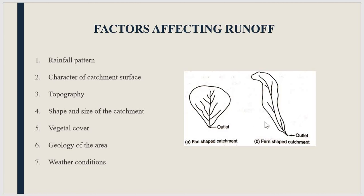If the area is very small and has a fern shape, some of the runoff water flowing along the streams may get evaporated, and only a lesser amount of water reaches the outlet as runoff. You can see there is a long pathway here, so throughout the way the water can get evaporated or get stuck somewhere.